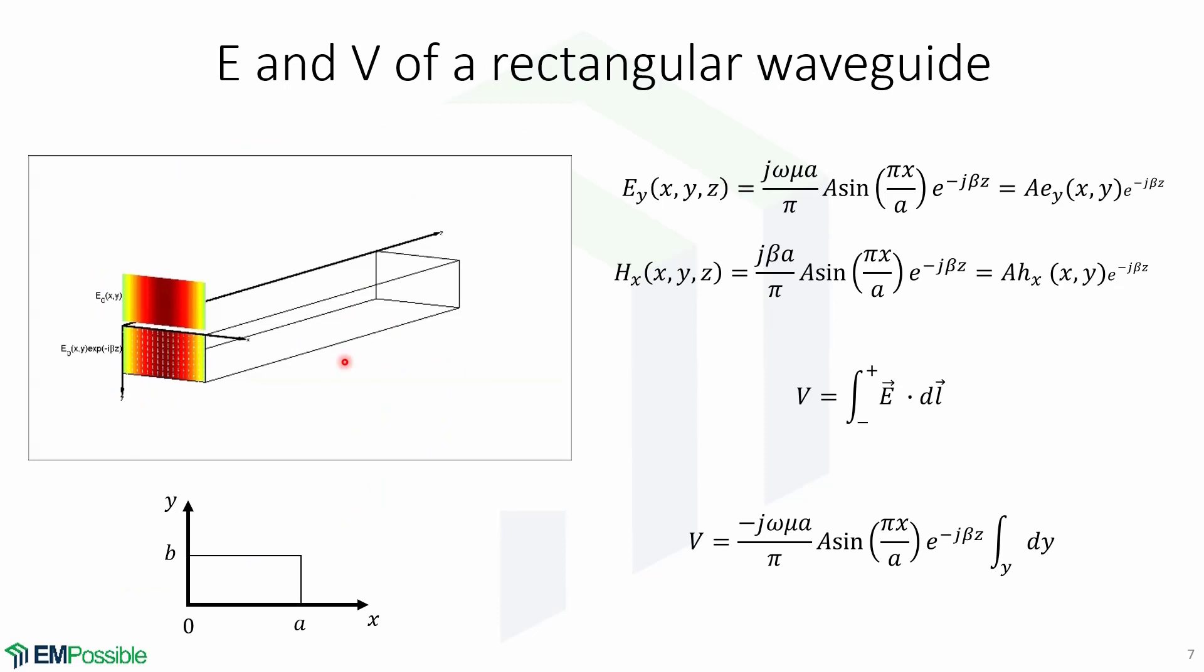However, determining these parameters in devices like waveguides is more difficult. For example, this is a waveguide that is showing the fundamental TE10 mode here. This is a cross-section of the waveguide with the dimensions shown in the XY plane. This is an animation of the electric field as a function of position Z.